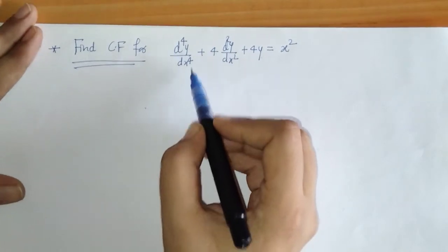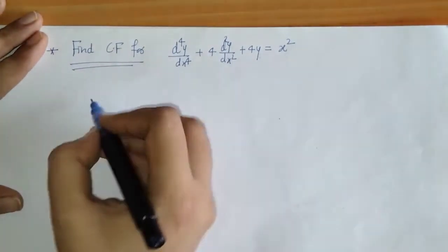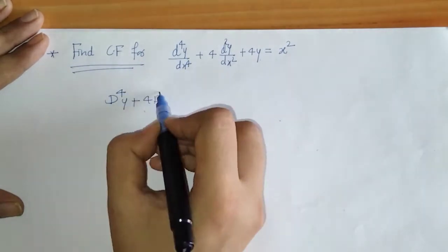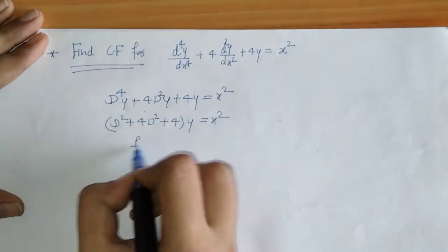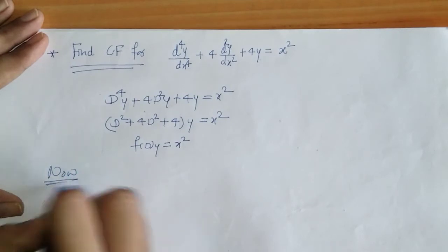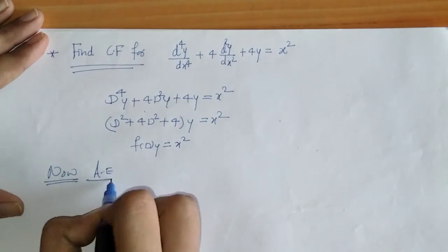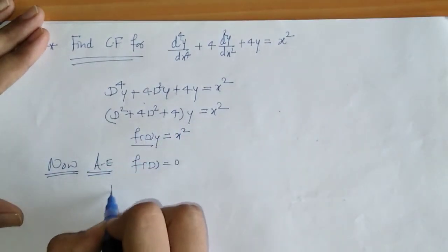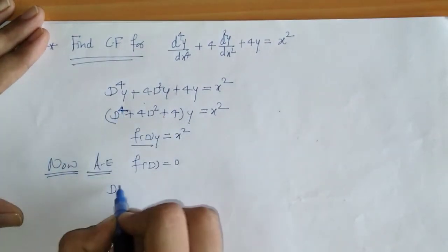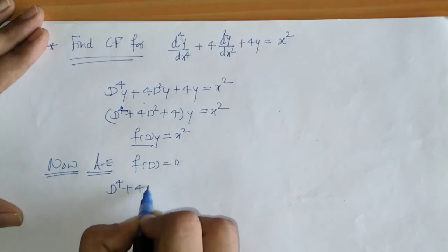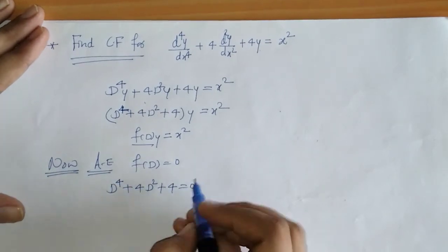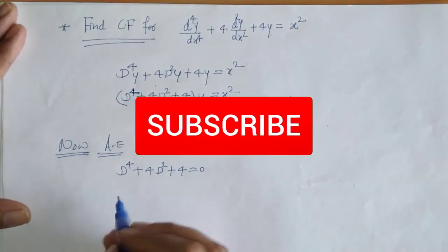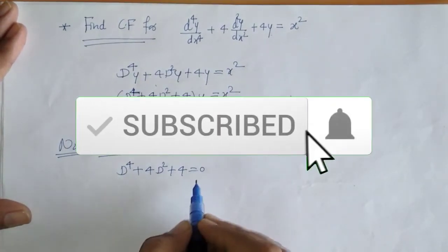Similarly, here we have the next differential equation. We write it in operator form. Now the auxiliary equation is found by setting f(D) = 0, which gives D⁴ + 4D² + 4 = 0. Now we have to find the roots of this equation.